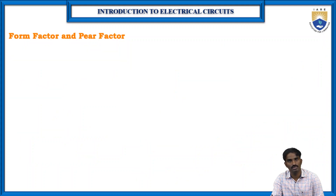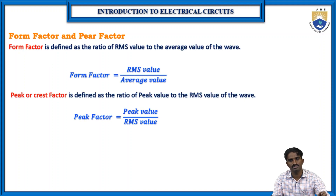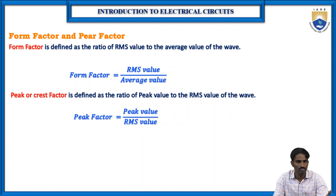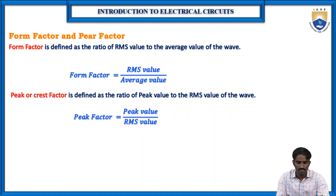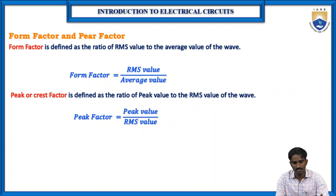Now, for form factor and peak factor — there are two equations. Form factor equals RMS value divided by average value. Once we find the average and RMS values, we can find the form factor. Peak factor is defined as the ratio of the peak value to the RMS value of the waveform. So: peak factor = peak value / RMS value. Using these two equations we can find the form factor and peak factor.